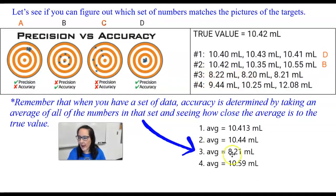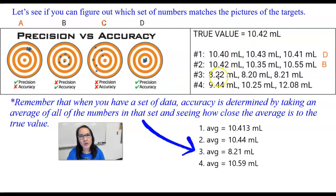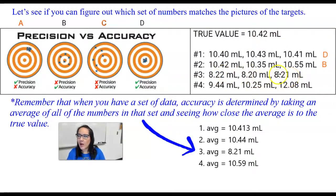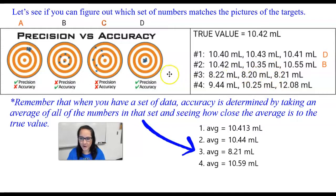For data set number three, the average is 8.21 milliliters — nowhere close to the true value, so this is not accurate. But if you look at the measurements compared to one another, 8.22, 8.20, 8.21 — they're all repeating each other, very similar. So this is not accurate, but it is precise. That's letter A.